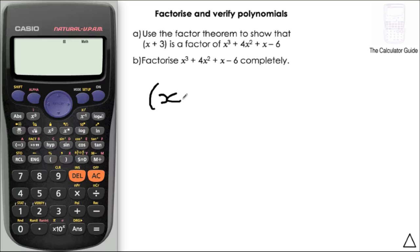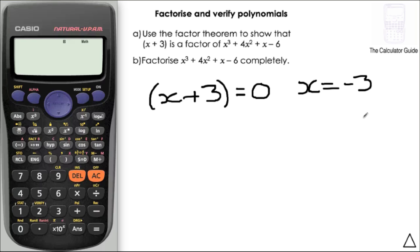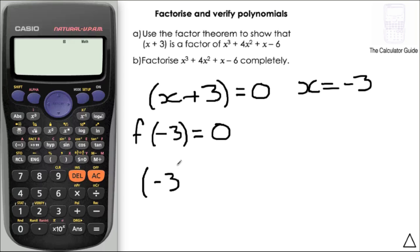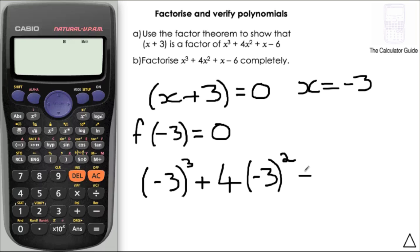What we're going to do is use the factor theorem to show that x plus 3 is a factor of x cubed plus 4x squared plus x minus 6. If you're familiar with the factor theorem you might want to skip about a minute ahead. We're thinking about what x value makes x plus 3 equal to 0, so we want x equals minus 3. The factor theorem states that if we put minus 3 into our function as our x value, we should get a result of 0.